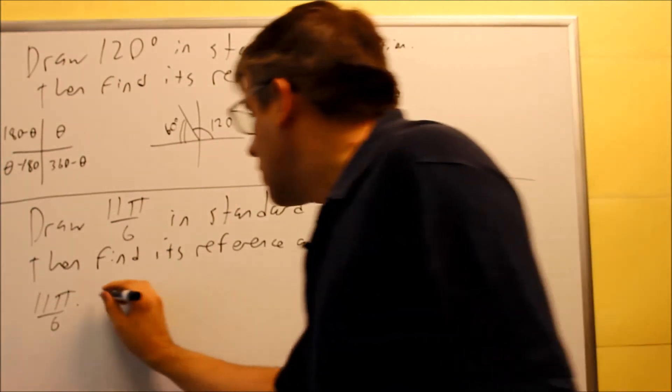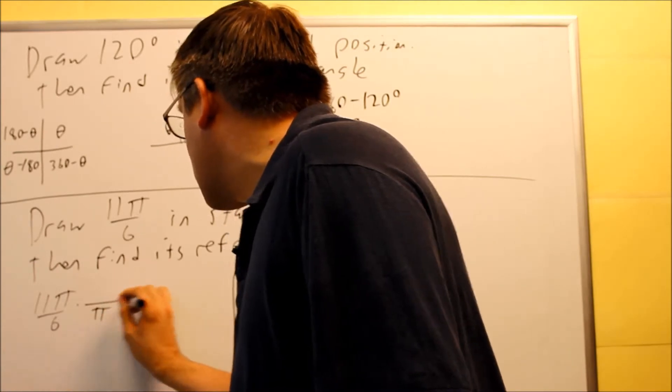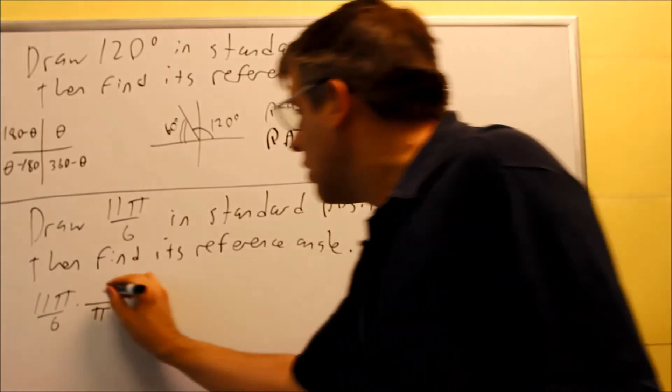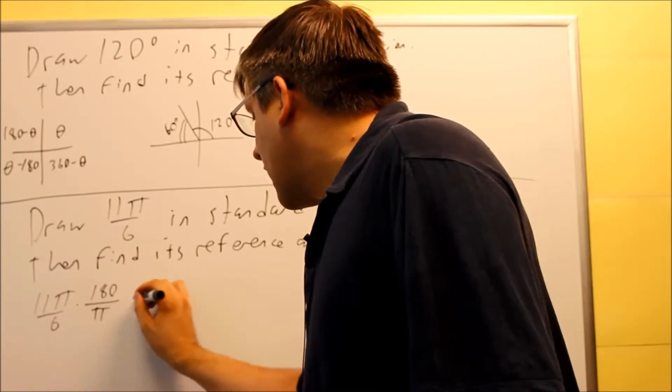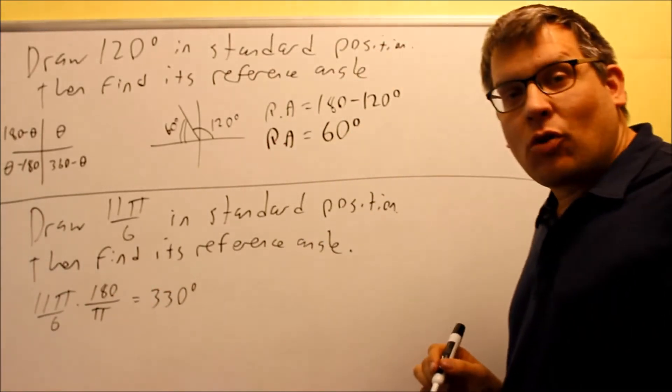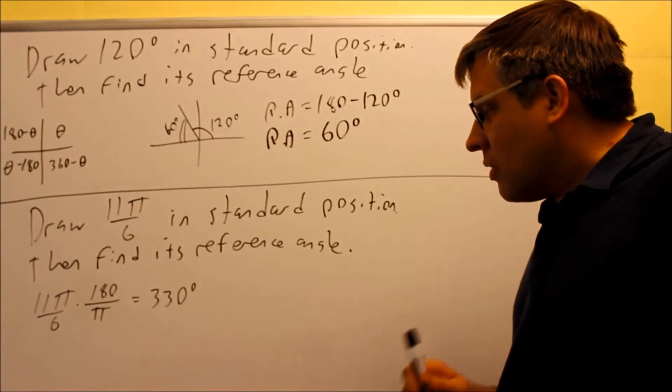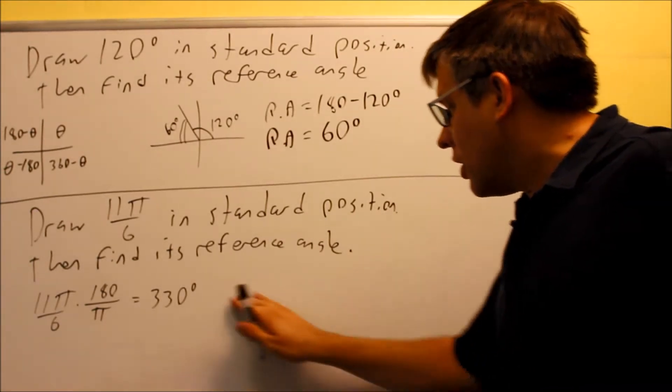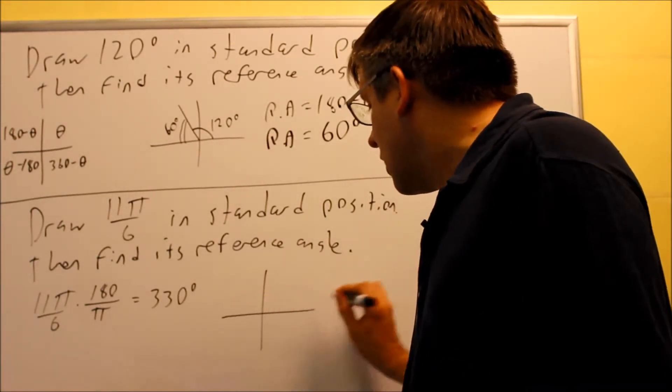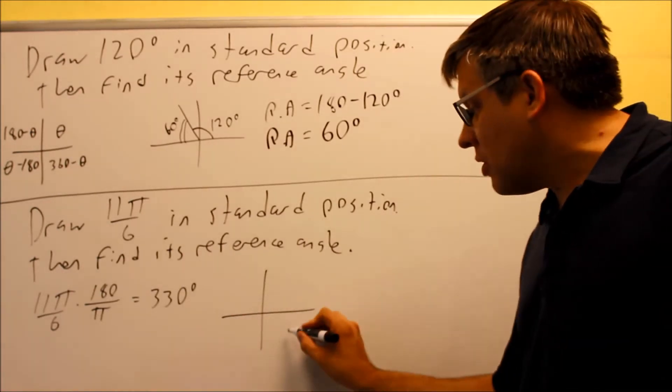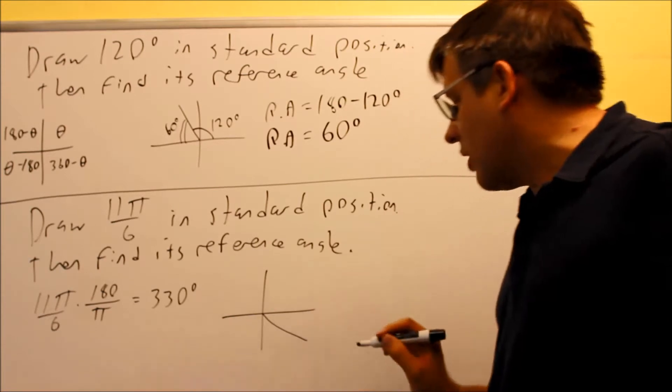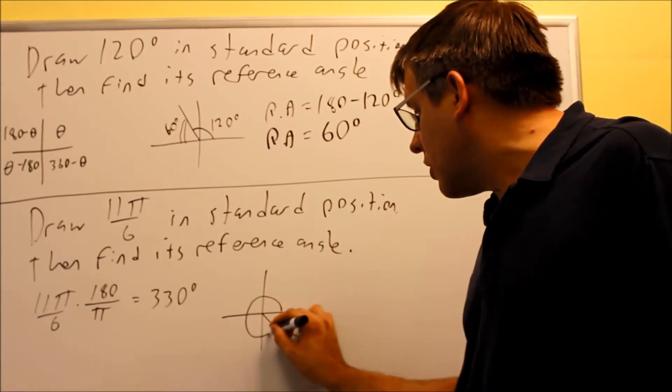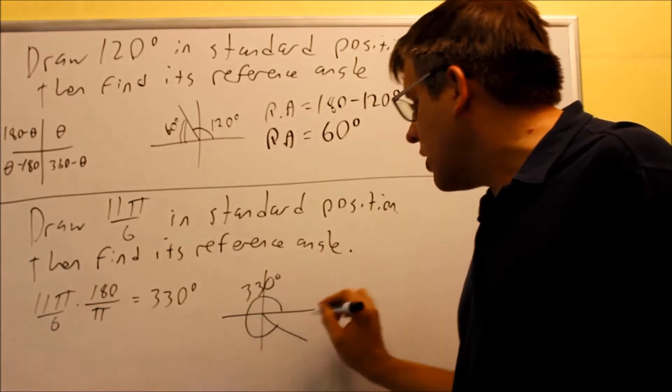Okay, so if we're changing it over into degrees, 11 pi over 6 times, okay, we want the pi's to cancel, so I'm going to put the pi in the bottom there. 180 is going to go on the top. And when we reduce all that, that's going to give us 330 degrees is the actual angle. So, now that I have 330, I can draw this in standard position. 330 is going to have to be down here in the third quadrant, and it's going to look something like this. The angle goes around this way. This is going to be 330 degrees.